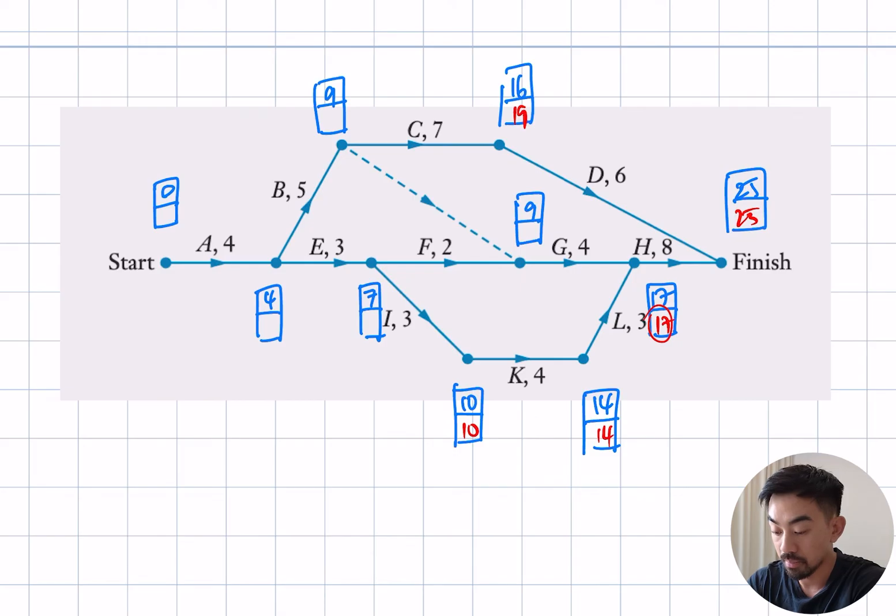17 minus 4 is 13. Need to make a decision. Is 19 minus 7 smaller than 13 minus 0? Well yeah, by 1. 19 minus 7 is 12. In the middle, 12 minus 2 is 11 or 10 minus 3 is 7. So 7 is smaller than 11. Okay, 12 minus 5 is 7. 7 minus 3 is 4. So that is 4 and 0.